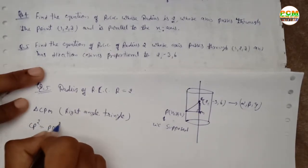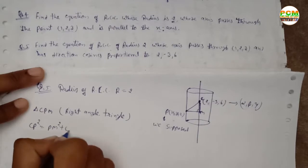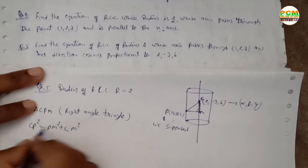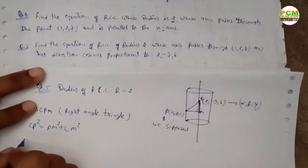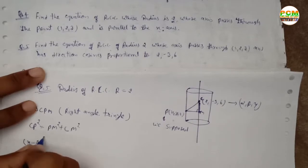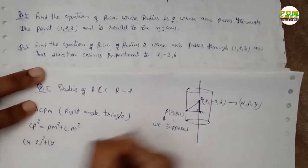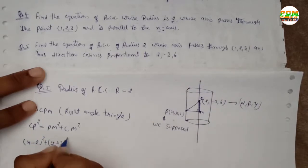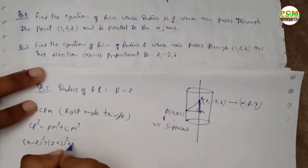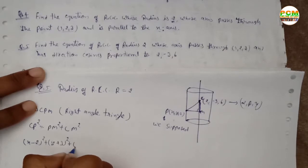From triangle CPM, which is a right angle triangle, we can write the formula: CP² = PM² + CM². CP is the distance between P and C, giving terms (x-2)², (y+3)², and (z-6)².